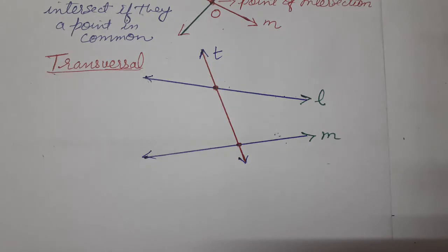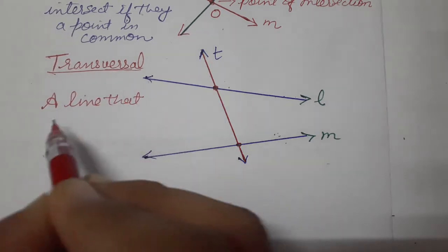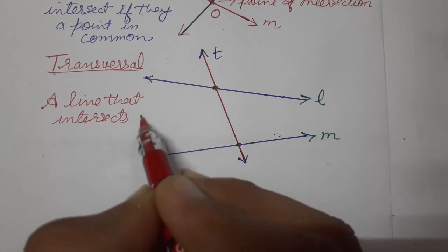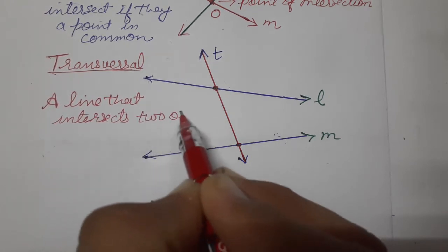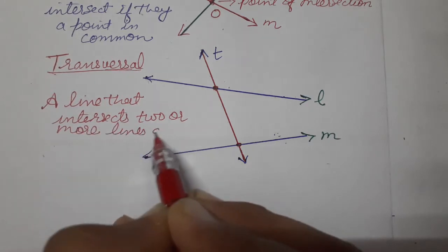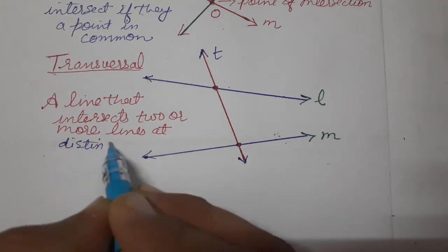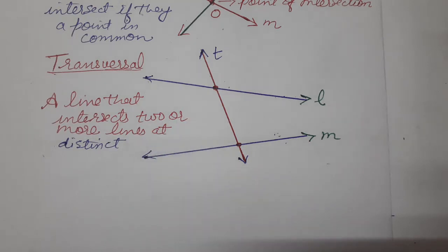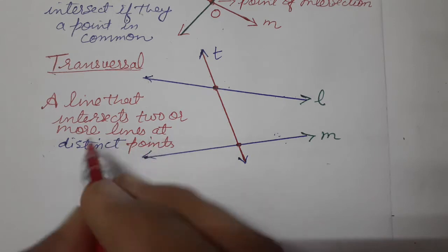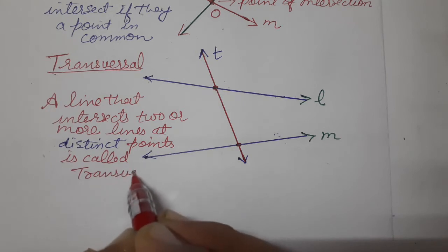We'll write: a line that intersects two or more lines at distinct points is called a transversal. The main thing is distinct — different points, not the same point. Distinct points. It's called transversal.